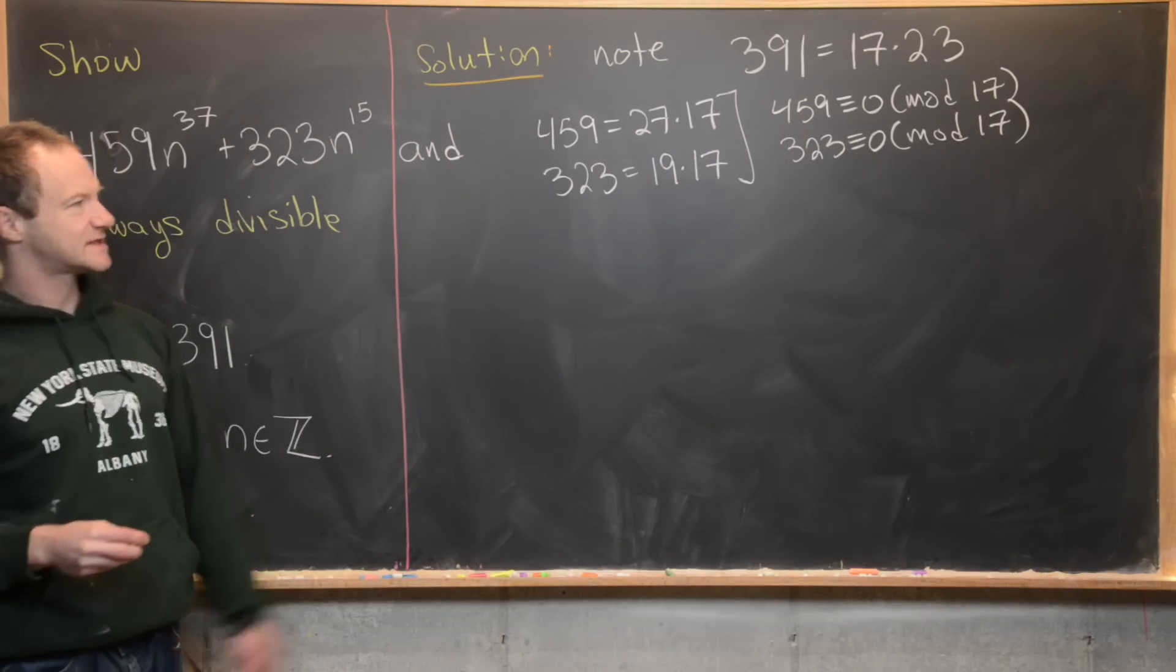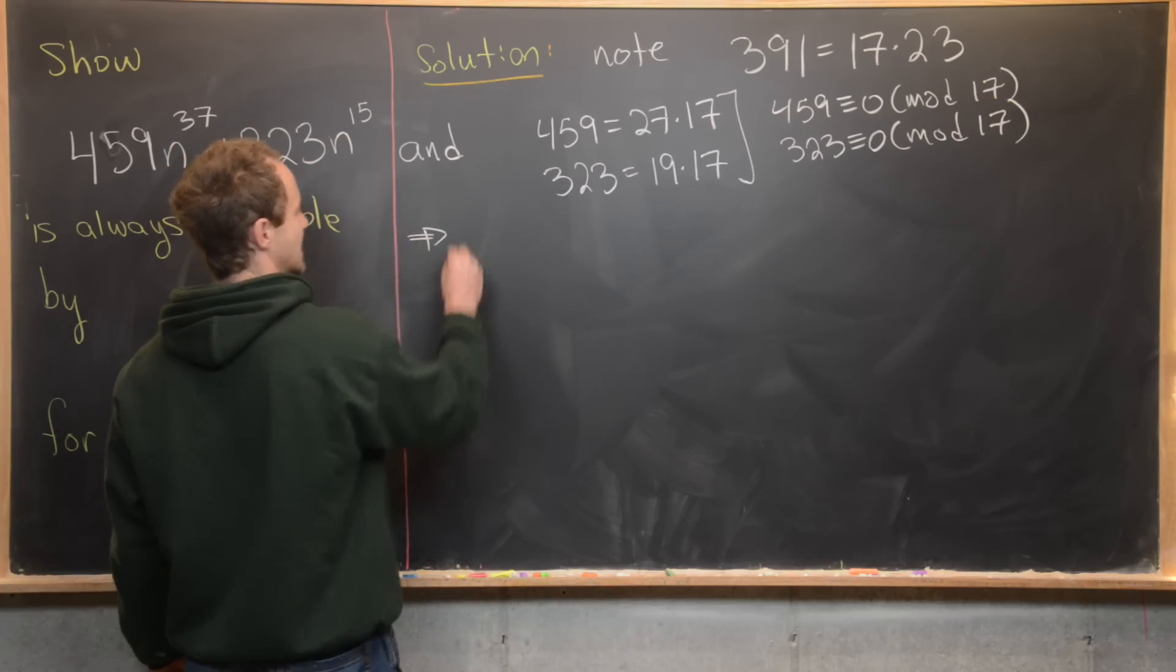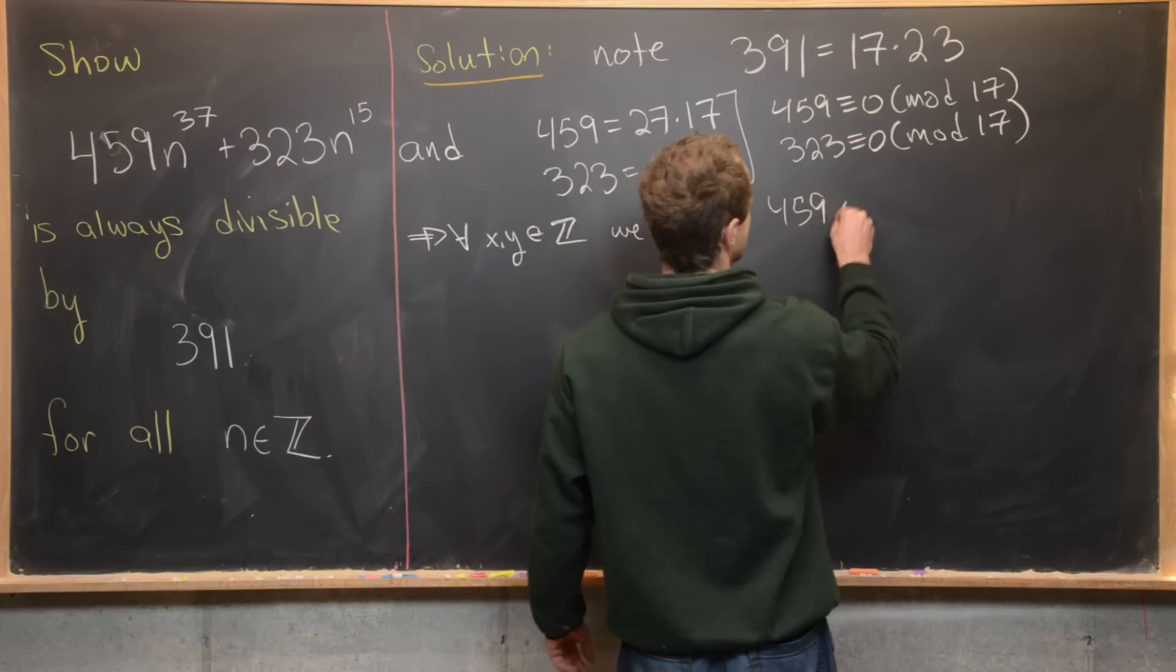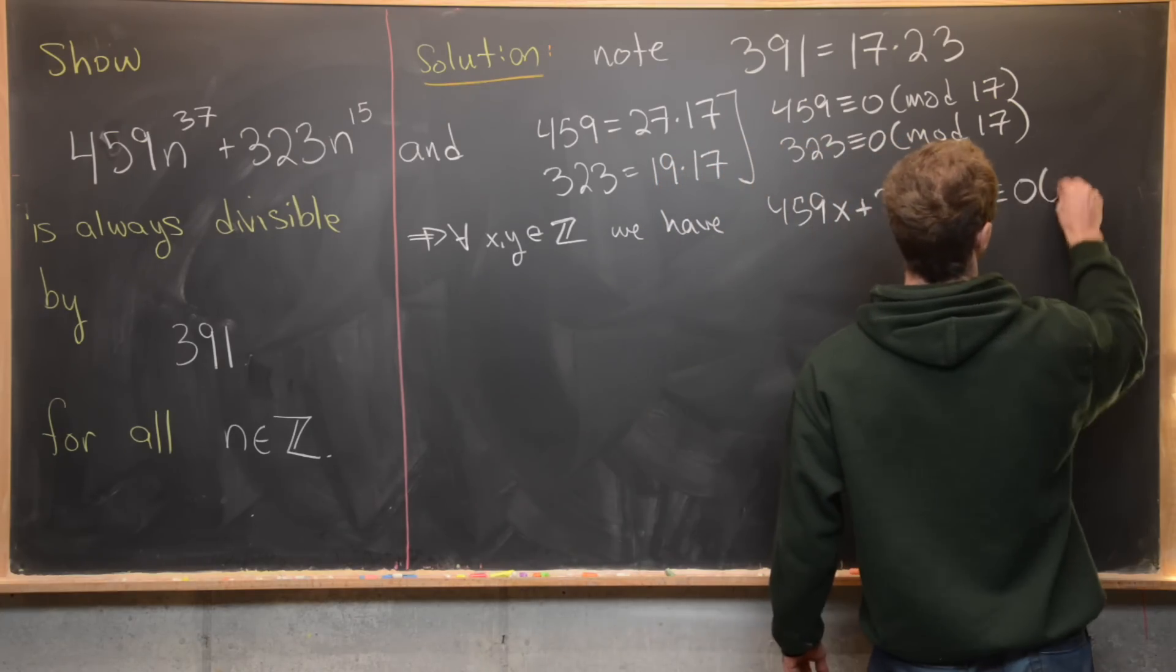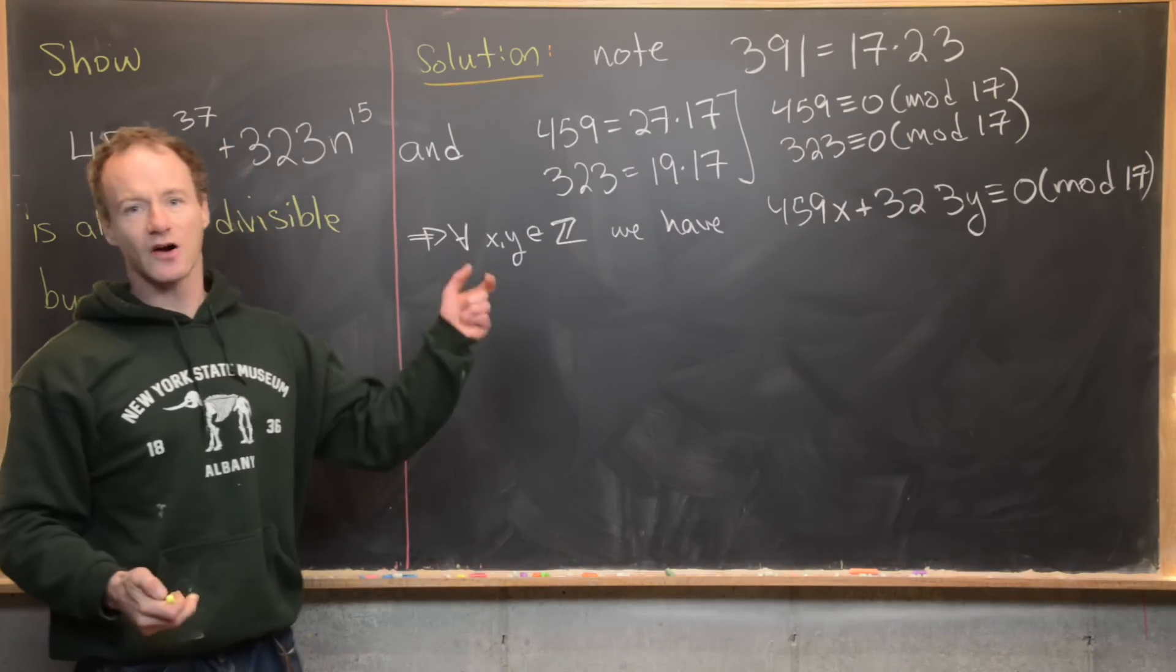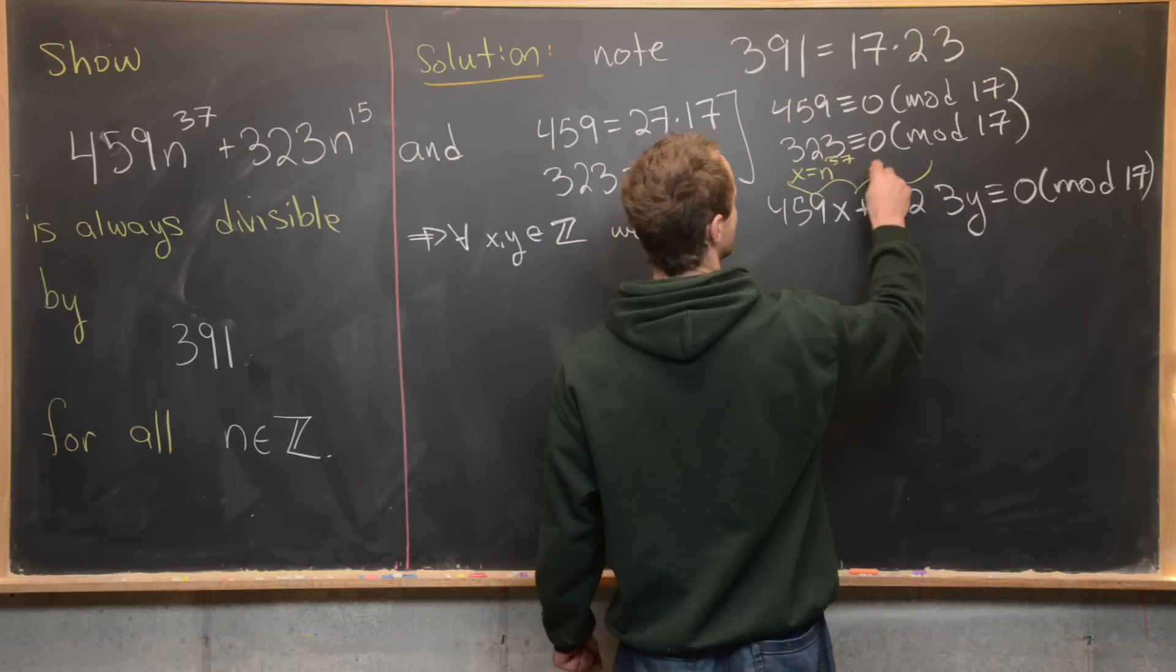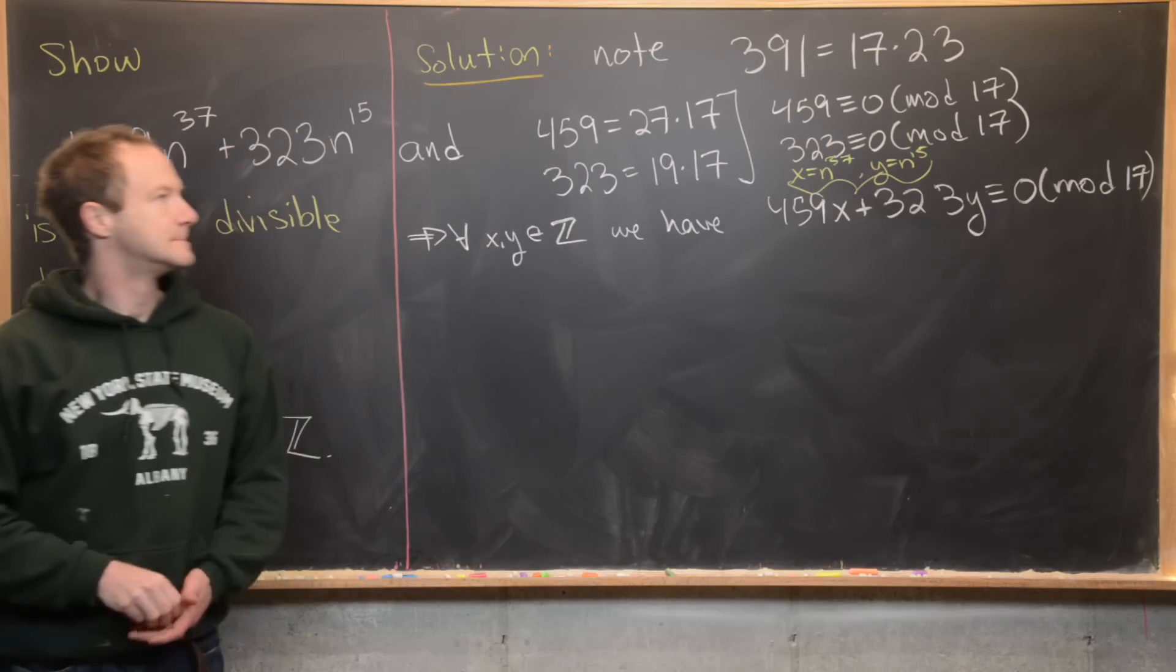But that gives us something that's actually a little bit stronger than our goal. That gives us the following statement for all integers x and y: 459 times x plus 323 times y is congruent to zero mod 17. Notice our setup is exactly a special case of this, where x is equal to n to the 37 and y is equal to n to the 15.